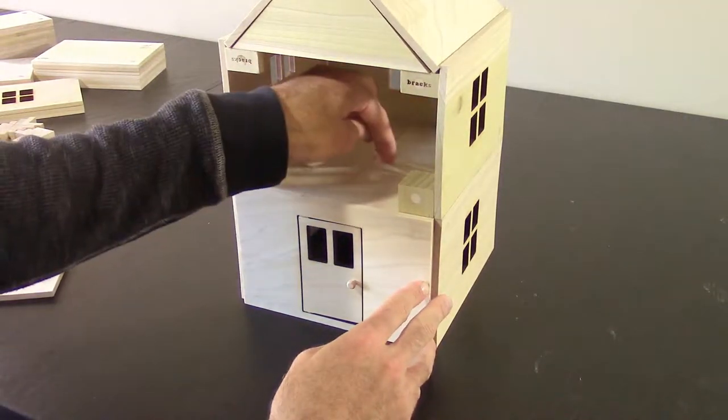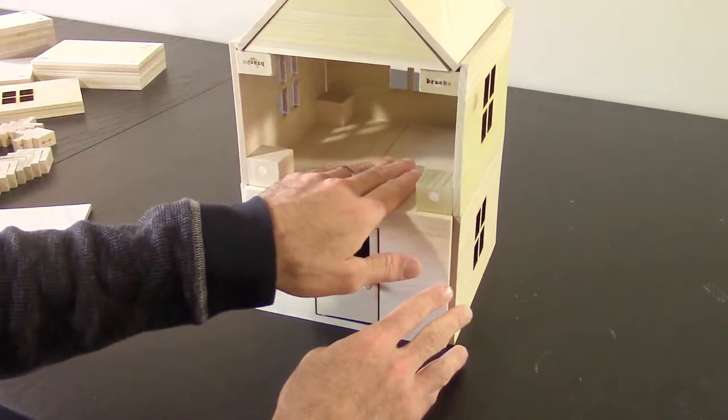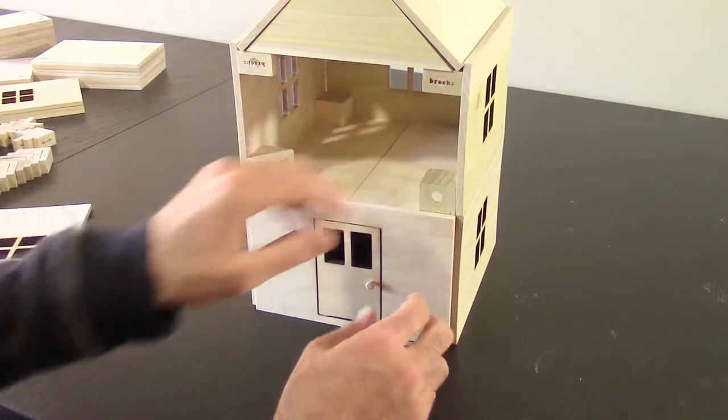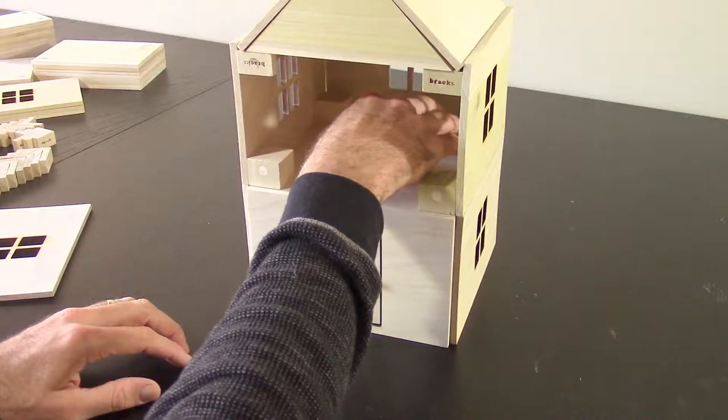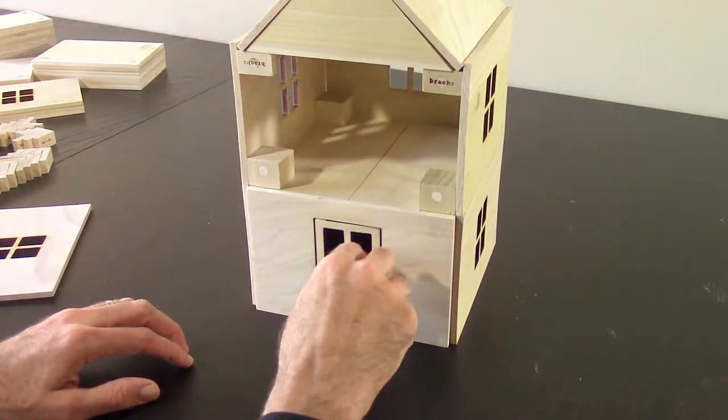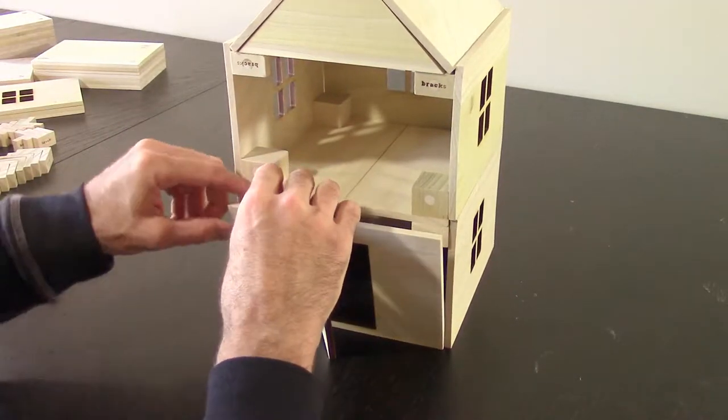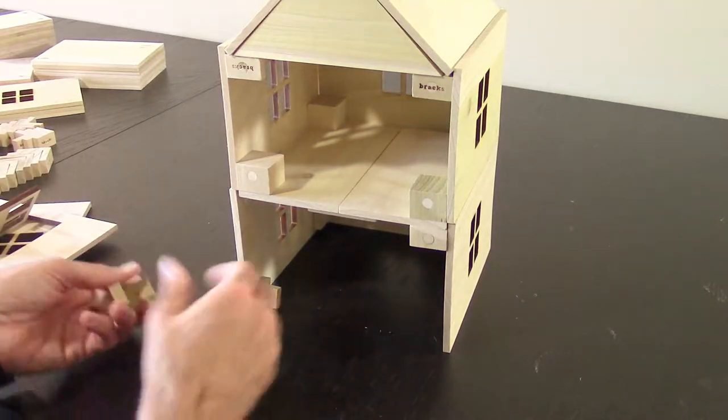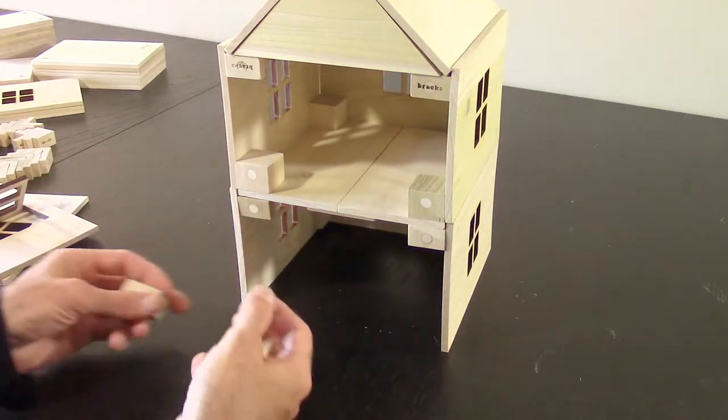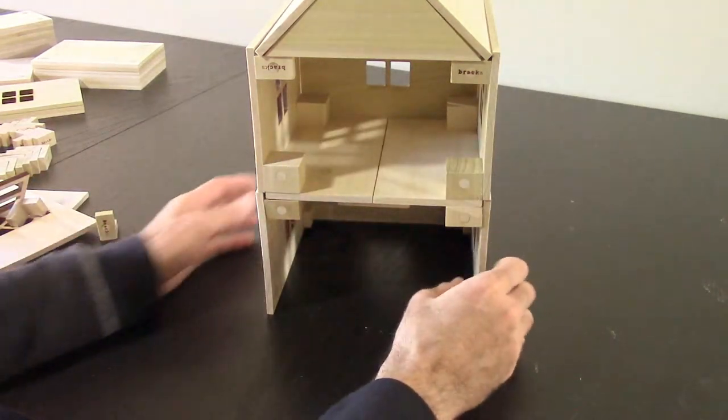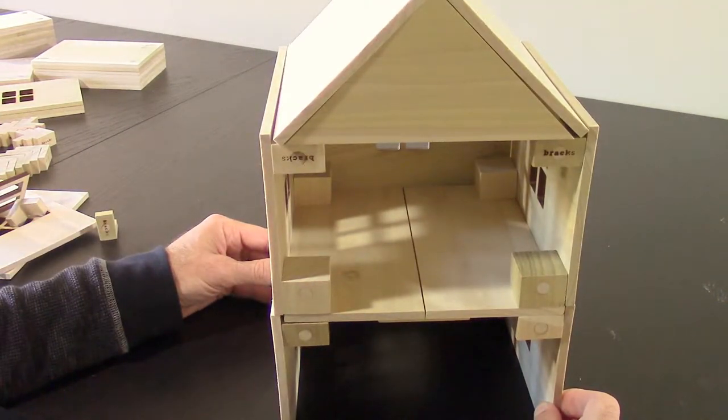You could also put a three by three panel in here and leave a spot open for access, much like where steps might be. Then you have access to the bottom floor as well. You could do the same thing on this floor - take that out if you want to play with action figures. You have full access here to play with your action figures or toy dolls.